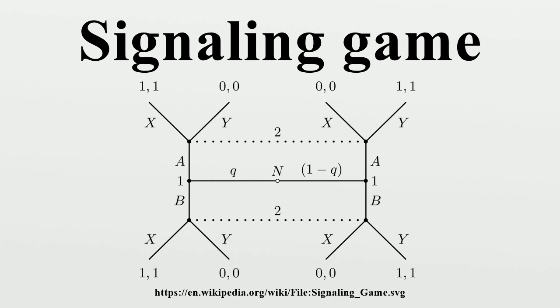The receiver observes the message but not the type of the sender. Then the receiver chooses an action from a set of feasible actions A equals A1, A2, A3, Ak.